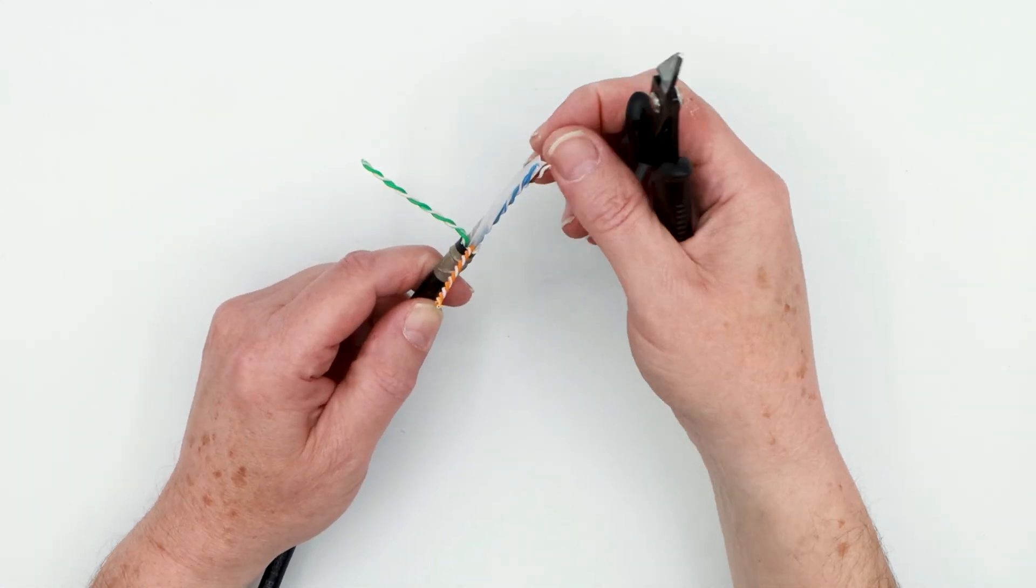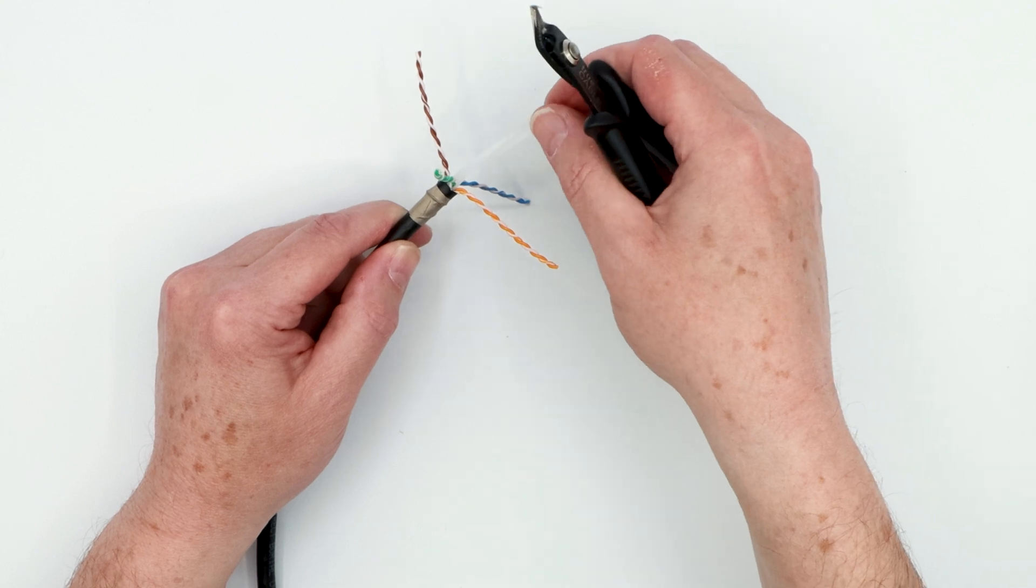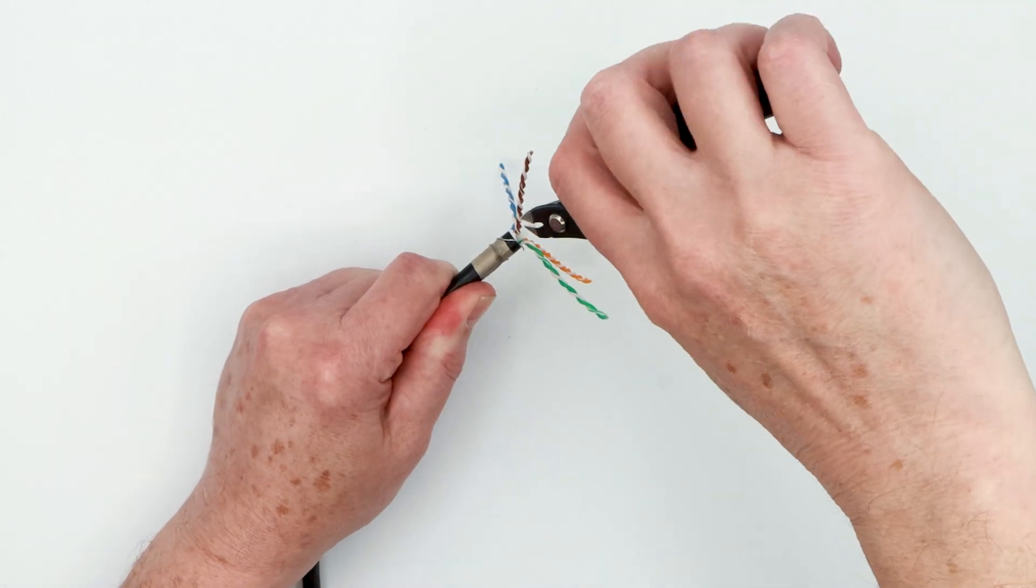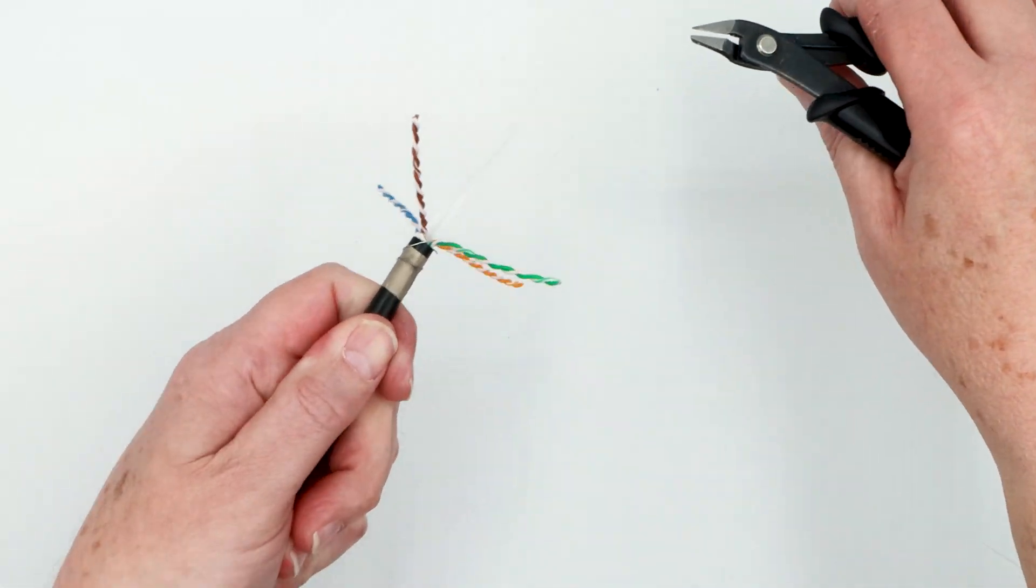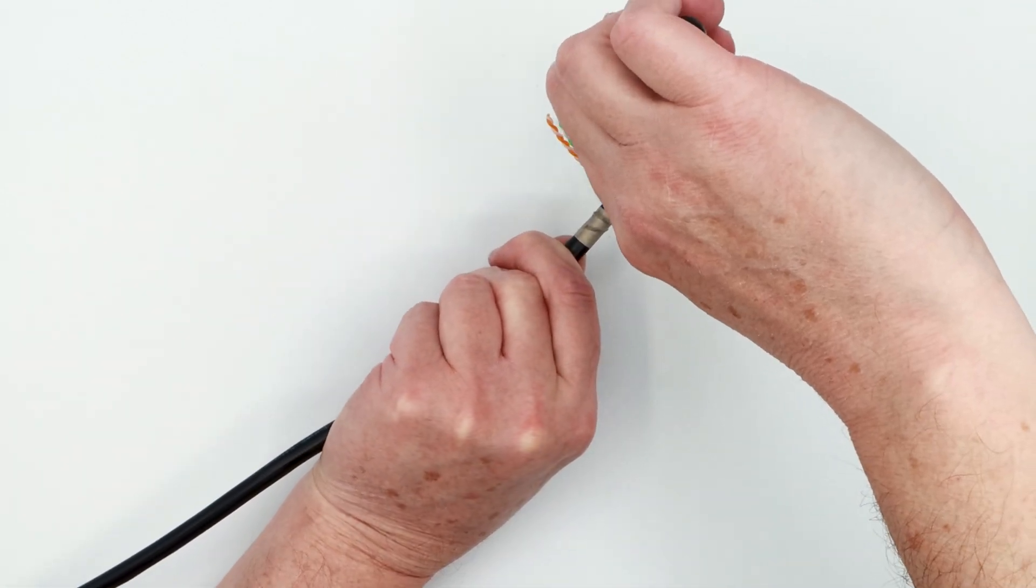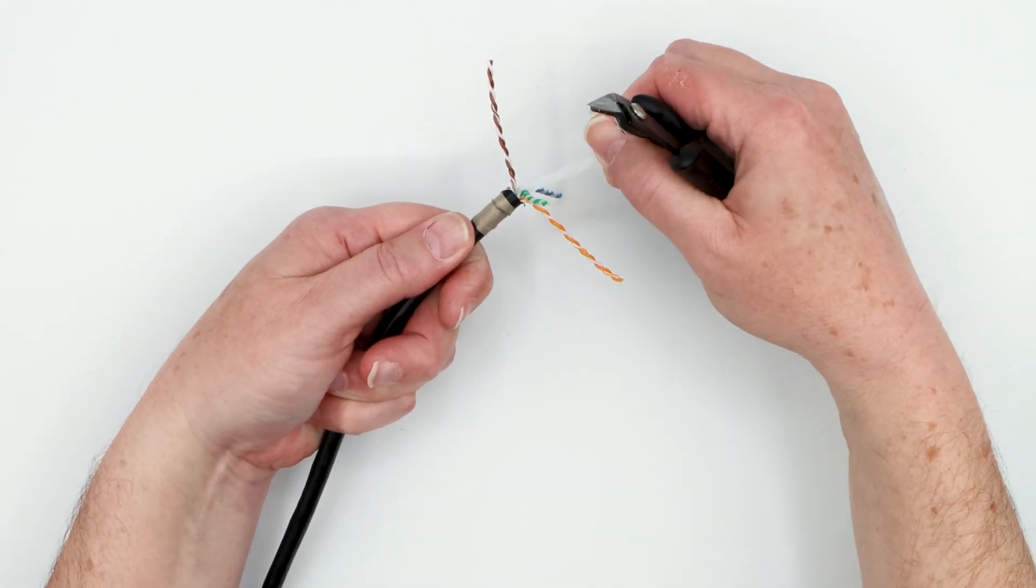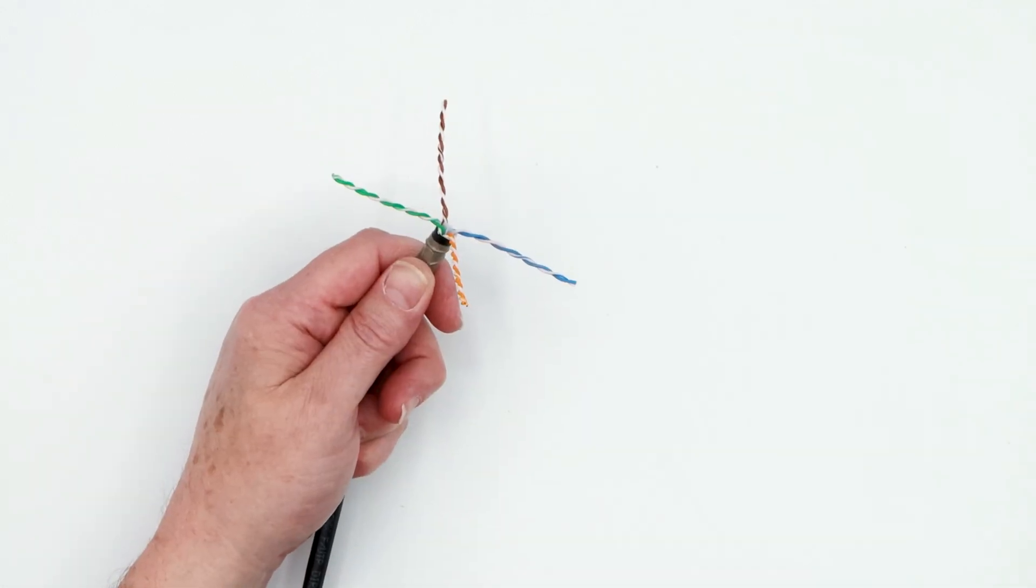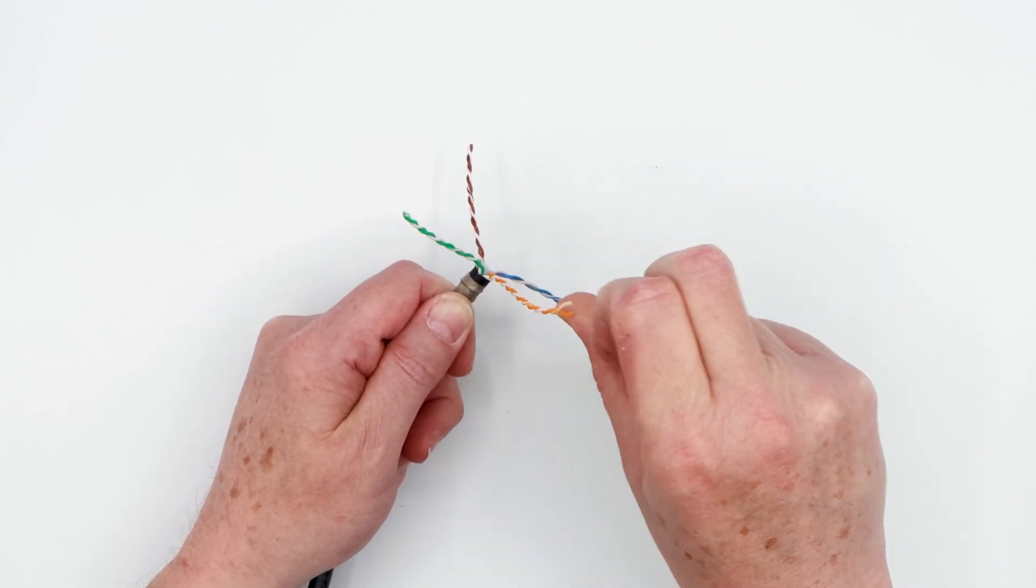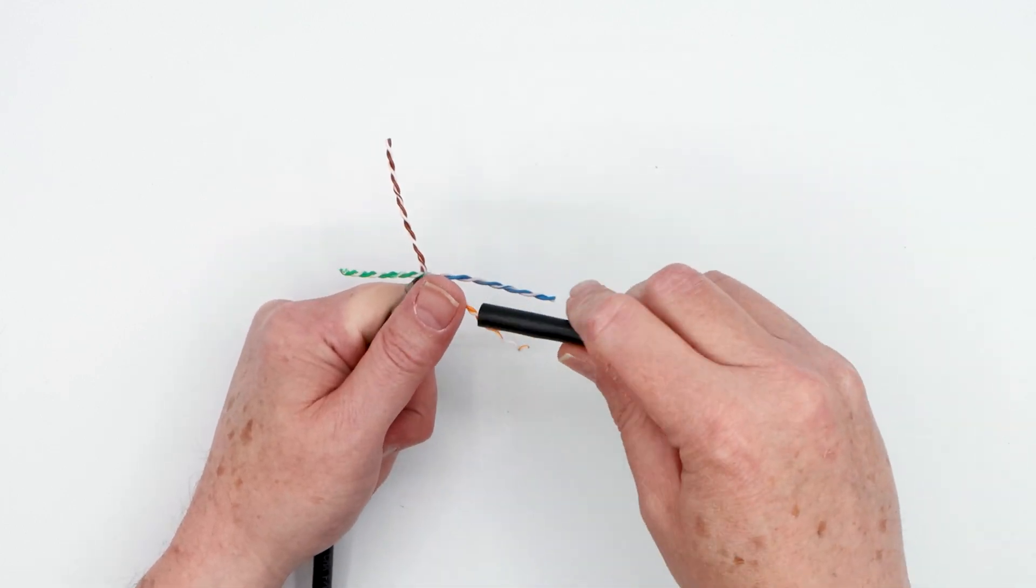And then the next is to go ahead and separate these conductor pairs into a star pattern. The spline has four wings and you want to at a downward angle cut each wing as close to the cable jacket as reasonable as possible without accidentally nicking a conductor in the process. So make four snips and then simply twist the spline and it comes right off. The next step is you want to untwist your conductor pairs. So we've got four pairs with eight wires. So we're just going to go ahead and untwist down to the jacket on all four pairs.